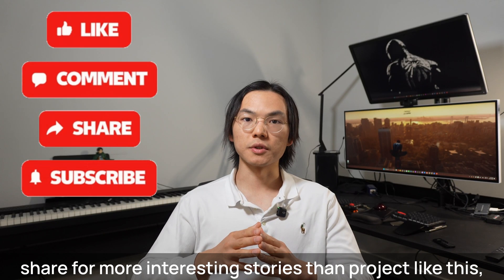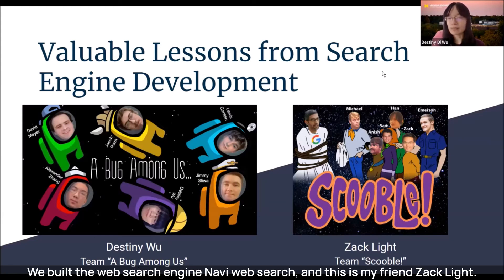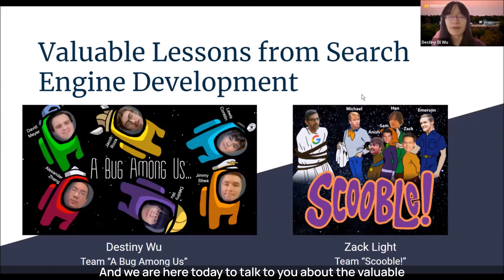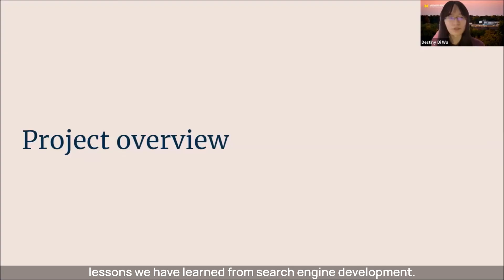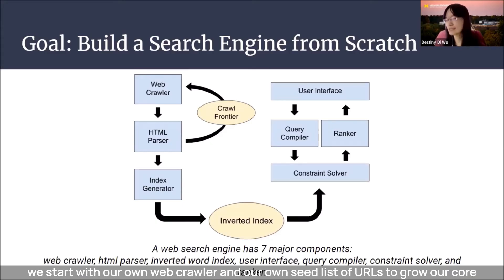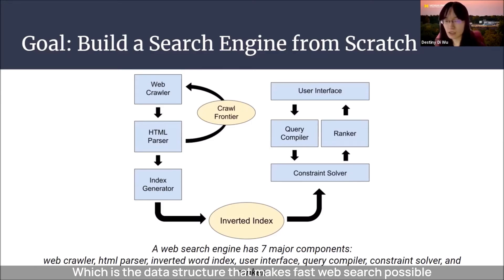Hello everybody. My name is Destiny Wu, and I am from the team A Bug Among Us. We built the web search engine Navi Web Search, and this is my friend Zach. Hi, I'm from the computing team Scoble. We built another search engine, Scoble Search Engine. Our goal in this project has been to build a search engine from scratch — meaning we start with our own web crawler and our own seed list of URLs to grow our crawl frontier, to extract documents from the web, to build our own inverted word index, which is the data structure that makes fast web search possible, and to put our own web server interface on top of all of that.